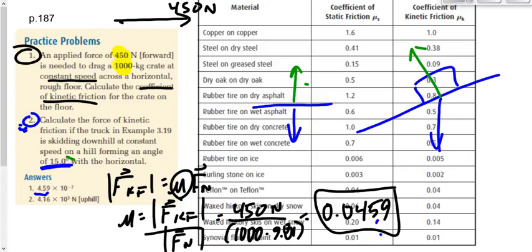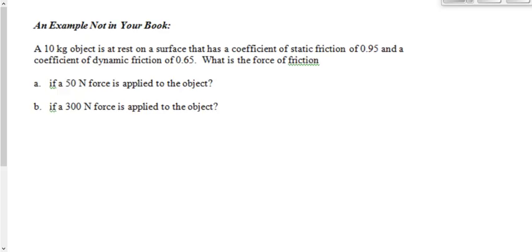Let's do another example. A 10-kilogram object is at rest on a surface that has a coefficient of static friction of 0.95 and dynamic — or kinetic — friction of 0.65. Are those coefficients realistic? Static is 0.95, kinetic is 0.65. Sure — we expect static to be bigger than kinetic. It doesn't mean the static friction force is always bigger, but the coefficient is always bigger.